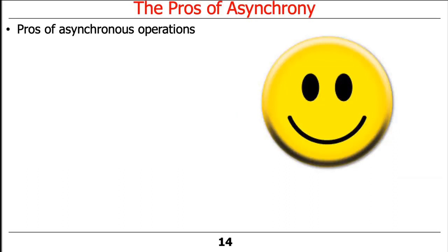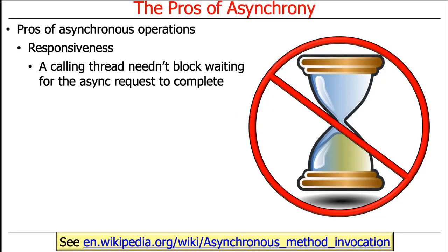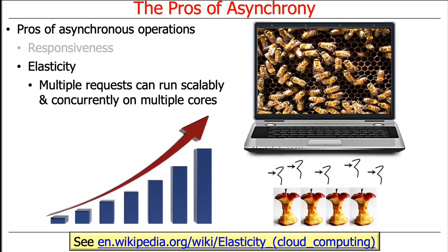Let's talk about the benefits of asynchronous operations. One benefit is that they make your code more responsive because the calling thread doesn't block waiting for the asynchronous request to complete — it can handle other things. Asynchronous approaches can also be more elastic because you can hand off requests to a pool of threads, let those threads do their work, and if you've got lots of cores, they will run and handle blocking in a clever, adaptive way. This ultimately means you can scale up better on the underlying multiprocessor cores.